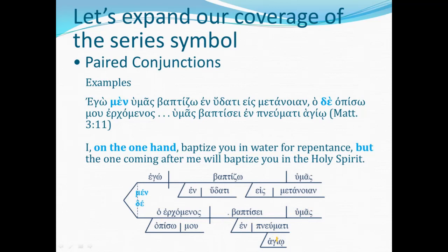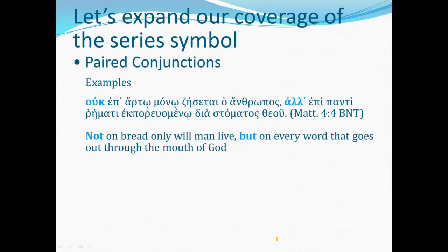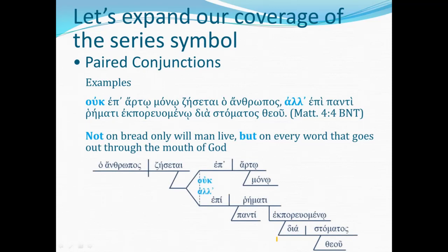We will have a couple of examples where the first word is not technically a conjunction, but it still seems best to put it together with the conjunction in a pair. These examples set up a pair where the first item in the series is negated and the second is set in contrast to it. In Matthew 4:4, Jesus says: 'Not on bread only will man live, but on every word that goes out through the mouth of God.' The kernel of the clause is 'man will live,' expanded with a pair of prepositional phrases using the preposition epi — not on bread alone, but on every word going out through the mouth of God.